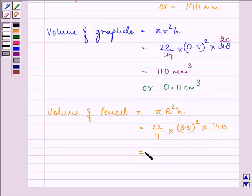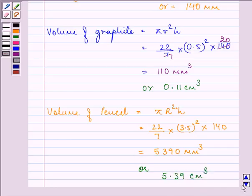The answer comes out to be 5390 mm³, or on converting to cm³ by dividing by 1000, we have 5.39 cm³.